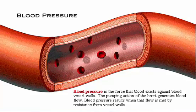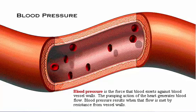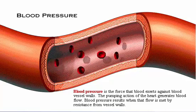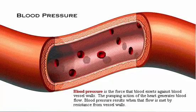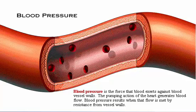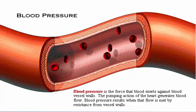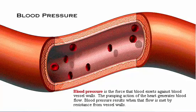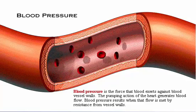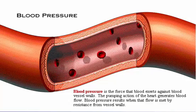Blood pressure is expressed in millimeters of mercury. For instance, a blood pressure of 120 millimeters of mercury is equivalent to the pressure exerted by a column of mercury 120 millimeters high.